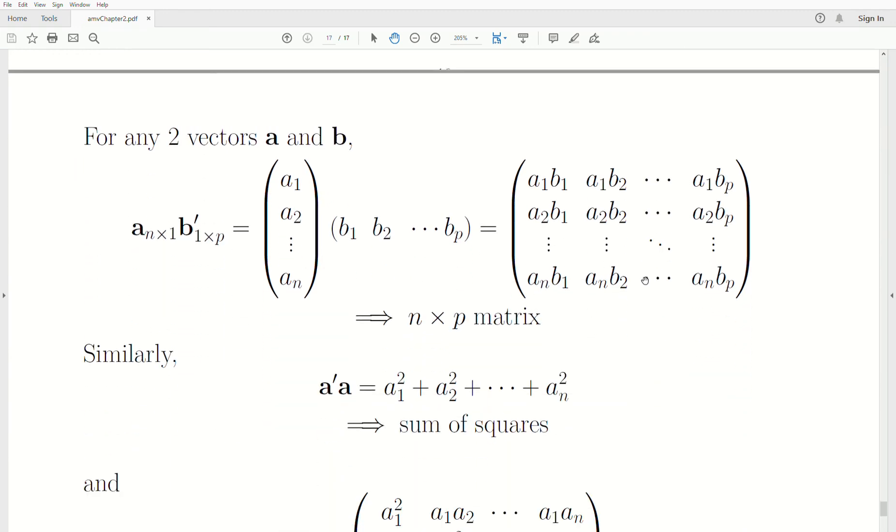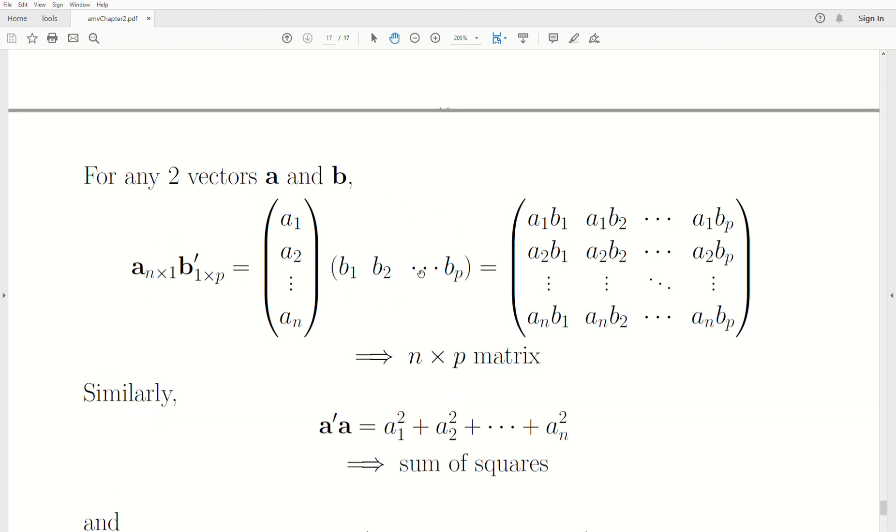And we'll illustrate that in a second. Now, if you take any two vectors and multiply them, so N by one, so it's a column vector, one by P, it's transposed, right? So it's a row vector. And it can be thought of as like this.